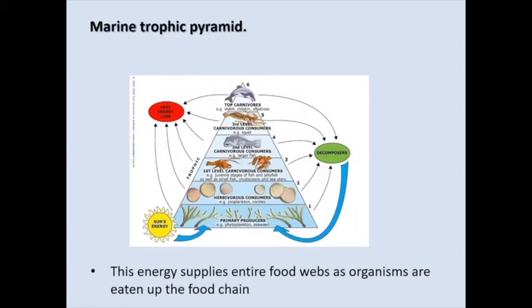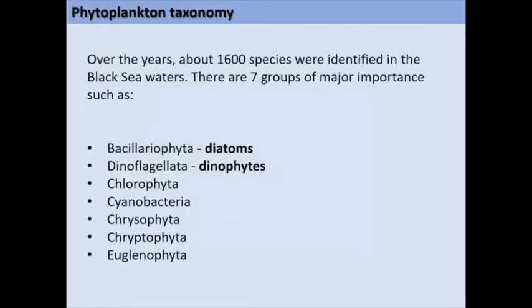Heterotrophs cannot generate energy from solar or chemical sources but must consume primary producers for energy. In this way, primary producers drive the food web. Now we will continue to talk about the phytoplankton taxonomical composition.